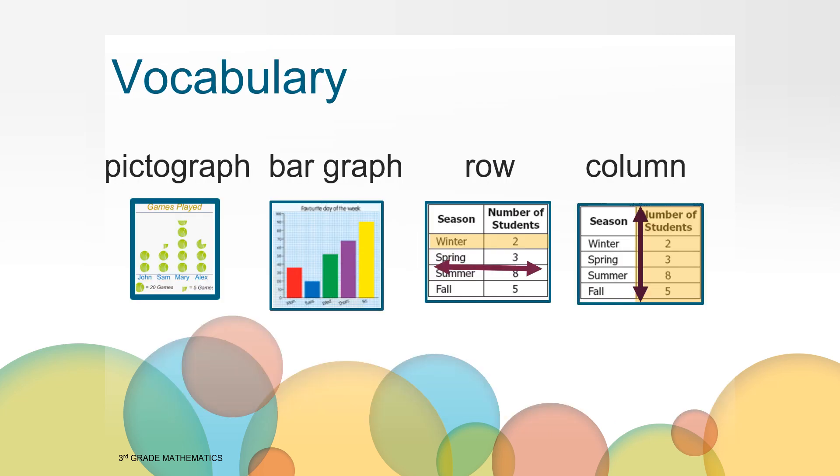You may hear some words that are new to you today, so as we work together, listen for these words and try to make connections between those new words and what we are learning. The first word is pictograph. A pictograph is a graph that uses pictures to represent information collected. A bar graph is a graph that uses bars to represent information collected. A row goes across from left to right, and a column goes up and down.